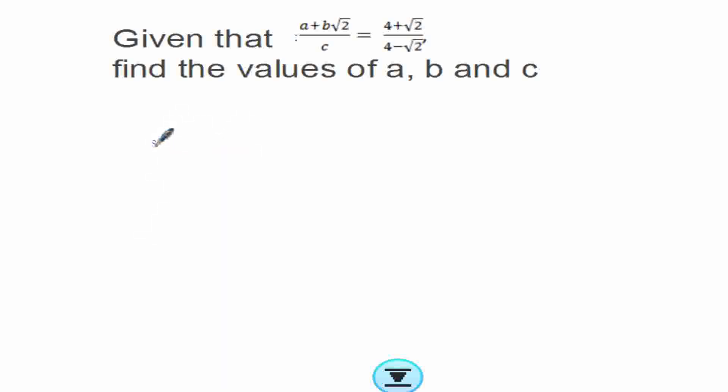Find the value of a, b and c. So we have 4 plus root 2 over 4 minus root 2. You can see in our question the denominator is an irrational number, so we have to rationalize this by multiplying it by its conjugate. The conjugate of 4 minus root 2 is 4 plus root 2, so we're going to multiply this by that.